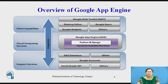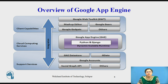Now we will see the overview of Google App Engine. It is designed with three different layers: support services at the bottom, cloud computing services in the middle, and client capabilities at the top. In support services, we have GAE datastores, GData, Google Accounts, Social Graphs, and APIs. In cloud computing services, we have the Google App Engine platform with Python and a dynamic scalable runtime environment. In client capabilities, we have Google Web Toolkit, mashup editors, Google Gears, and Google Gadgets.